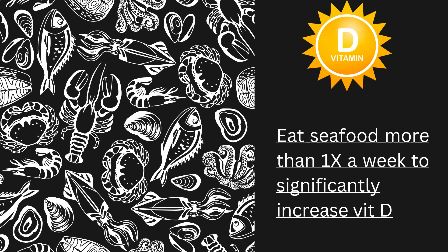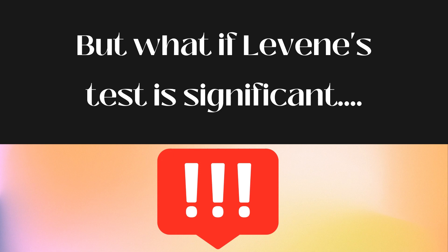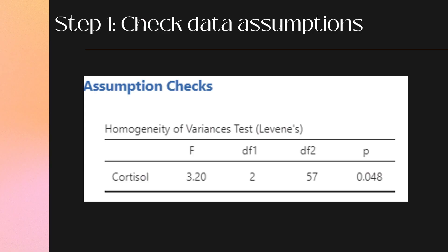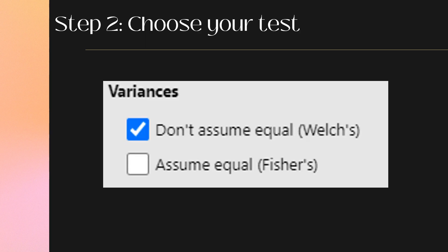This is how an ANOVA is done when there are no issues with homogeneity of variance. Let's look at another example to see what we can do if Levene's test is violated. People who are optimistic tend to do better in stressful situations. Let's have a look at three types of people: optimists, pessimists, and neutralists. We can measure their stress hormone levels after being forced to wake up at 4:30am every day for two weeks. Step 1: Check our data assumptions using Levene's test. Levene's test is significant — our data is not homogeneous, so we cannot do a standard ANOVA. We have to do a different test called the ANOVA Welch test.